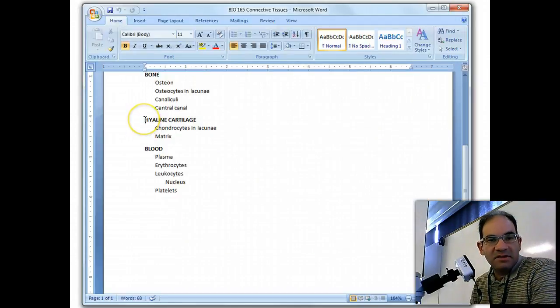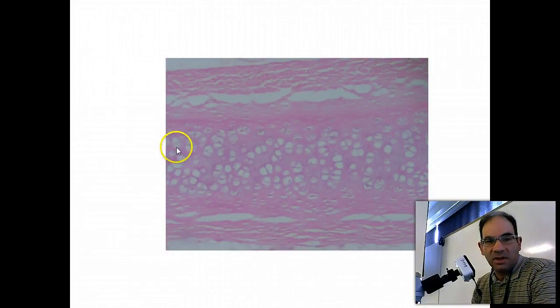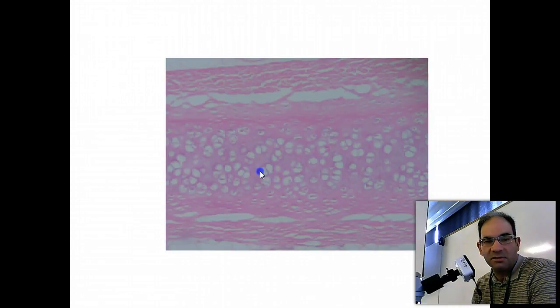Our next tissue type is hyaline cartilage, and you're responsible for chondrocytes in lacuna and matrix. So here we are at 100x, and you can see this nice band of cartilage right through here. And each of these little spaces is your chondrocyte in its lacuna. And the pink surrounding the spaces is your matrix.